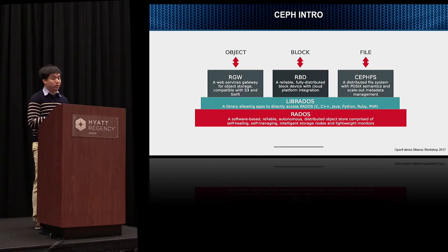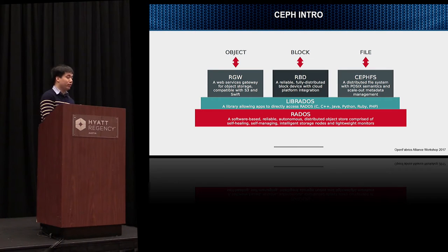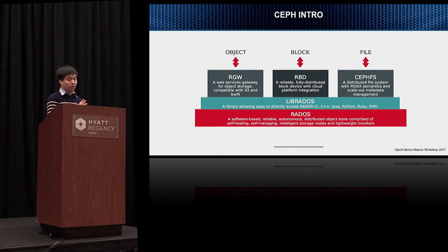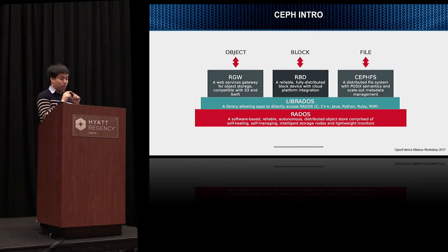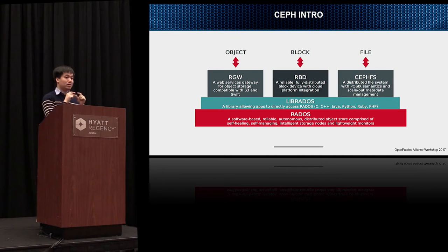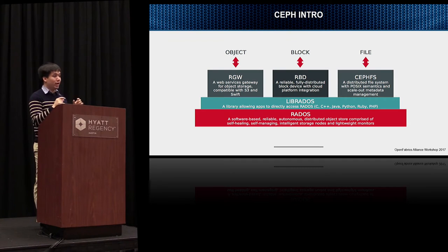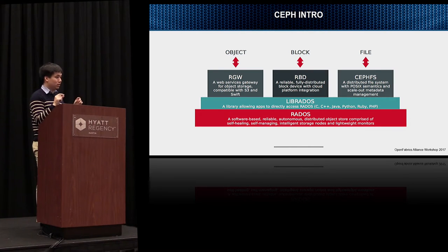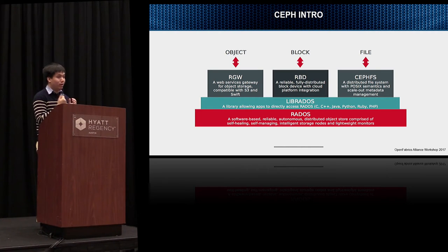This picture shows Ceph's interfaces. The first is Object storage, which supports Amazon S3 and OpenStack Swift interfaces. The second is Block, with a common block interface. The third is CephFS, which supports the POSIX interface. Below these three interfaces is librados, a client library that accesses the Ceph cluster. RADOS is the distributed storage cluster, combining multi-host OSDs and monitors.